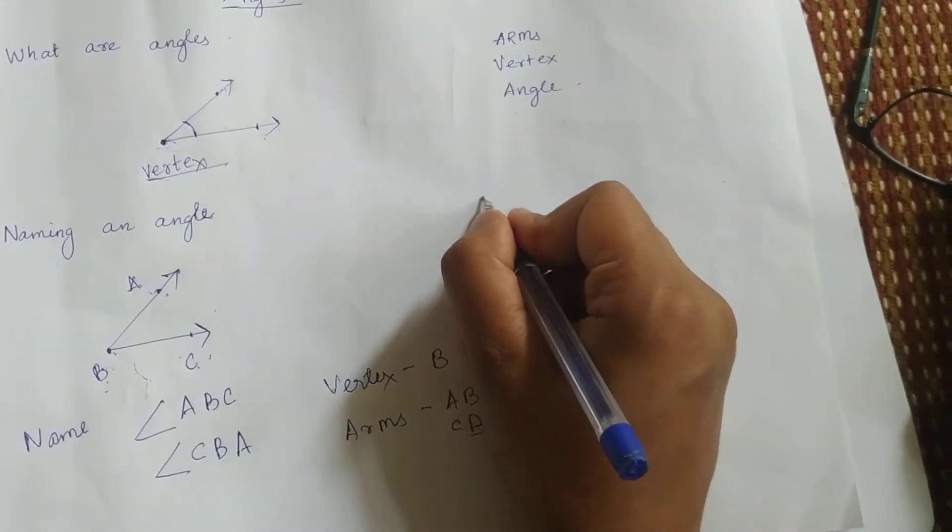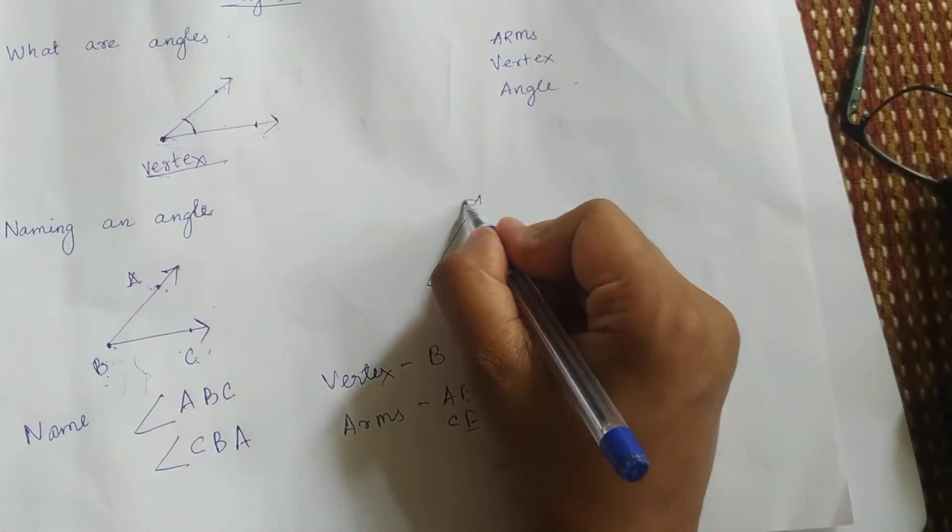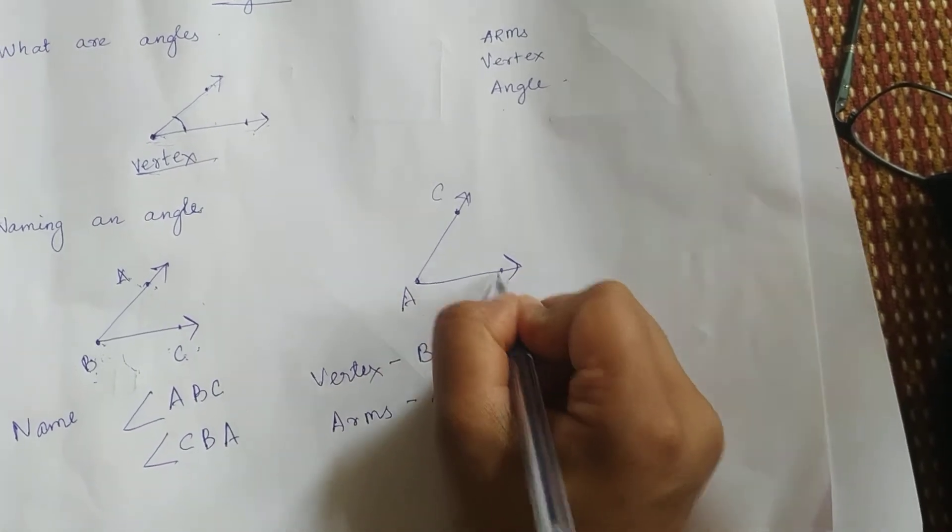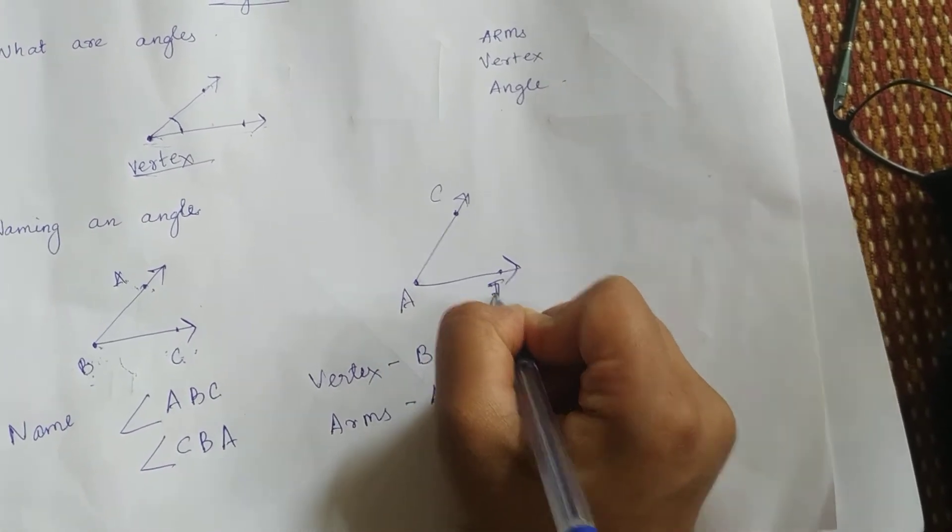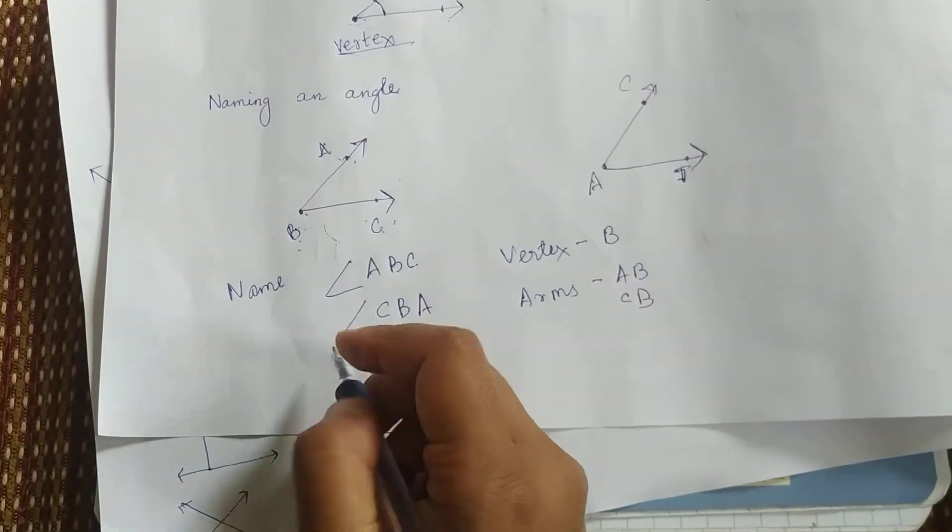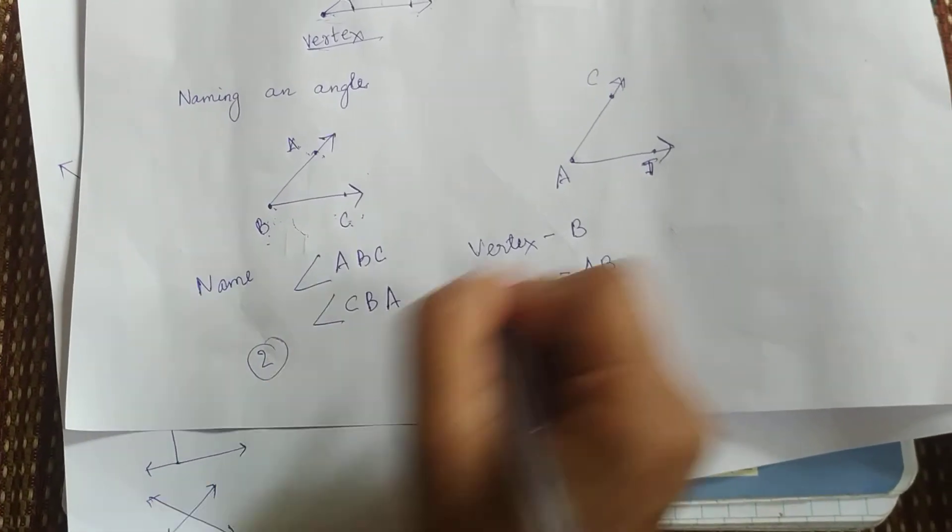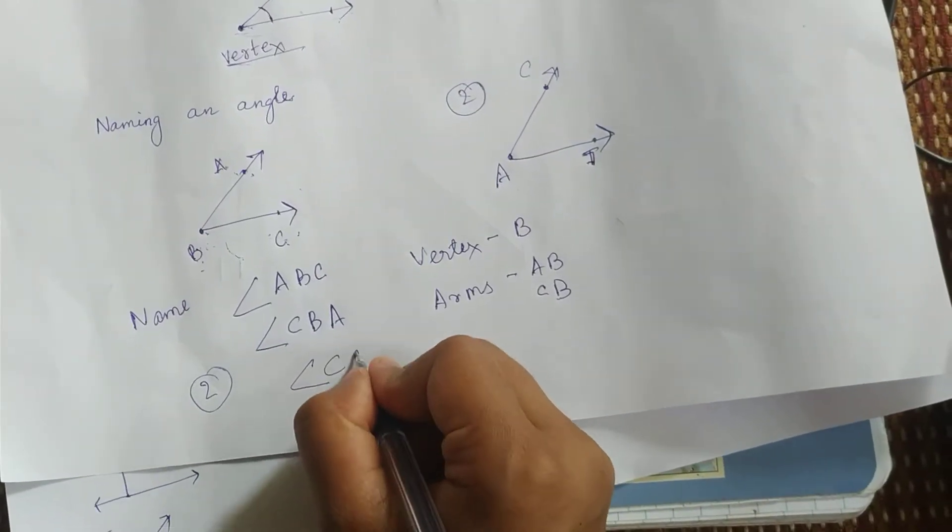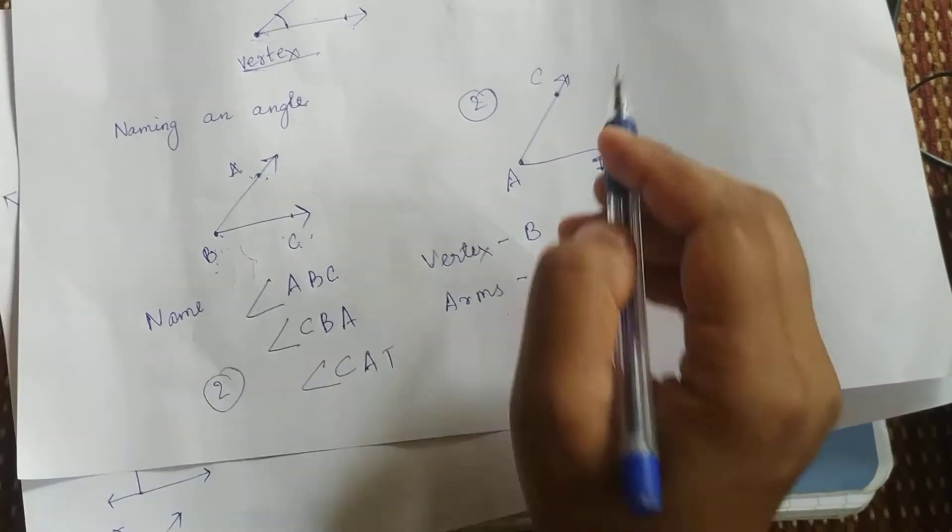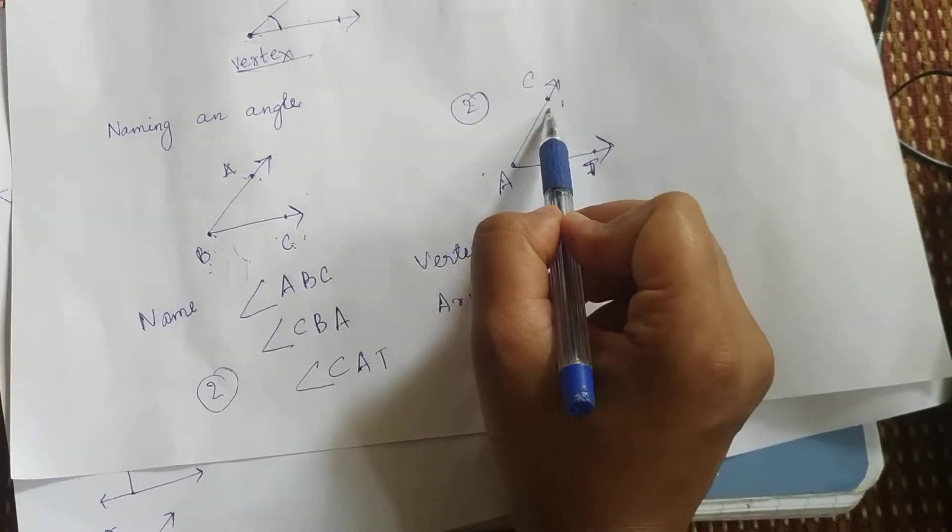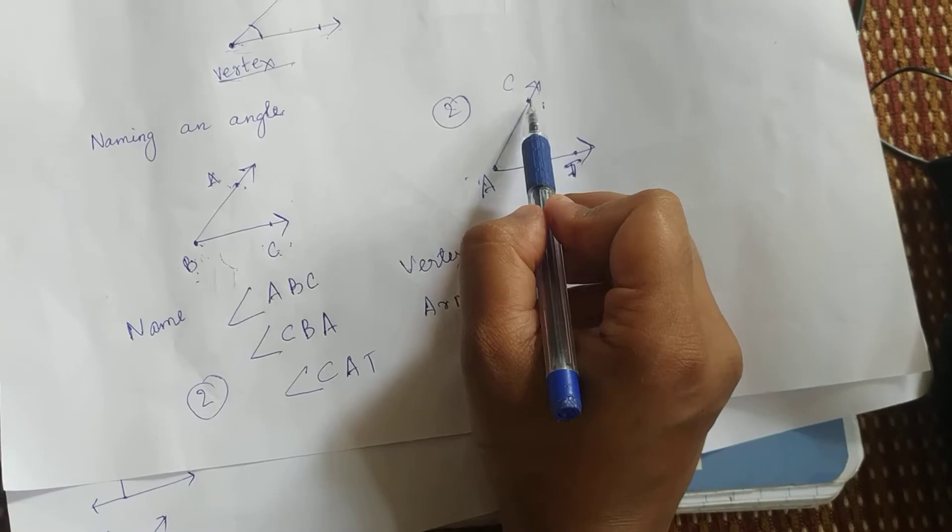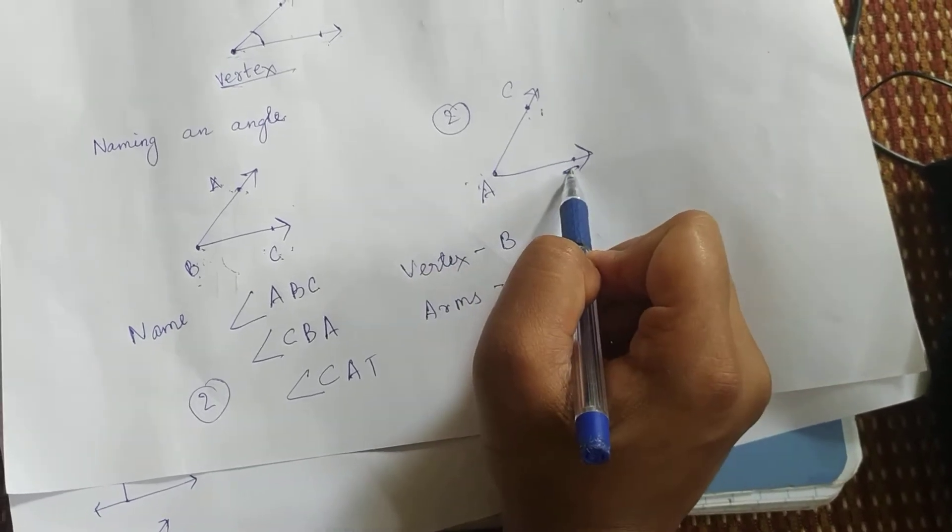Let's see one more example. Suppose I have given you an angle like this. This is C, this is A, this is T. So what will be the name of this angle? I am going to write here. Number two, the name is angle CAT.